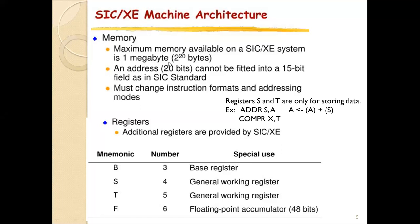Since SIC/XE accesses 1 megabyte of memory, the address bus is 20 bits wide. Memory capacity = 2^20 bytes = 1 megabyte. A 20-bit address cannot fit into the 15-bit field used in standard SIC. This means the increase in memory leads to changes in instruction format and addressing mode. As in standard SIC, any three consecutive bytes form a word (24 bits).